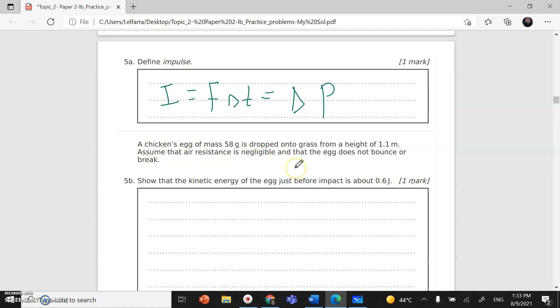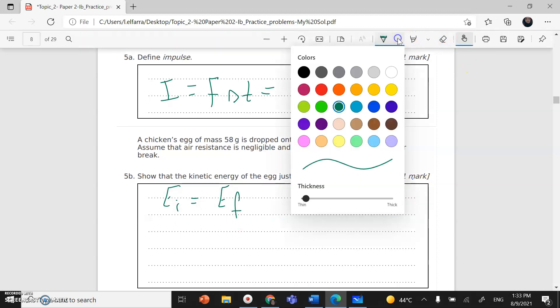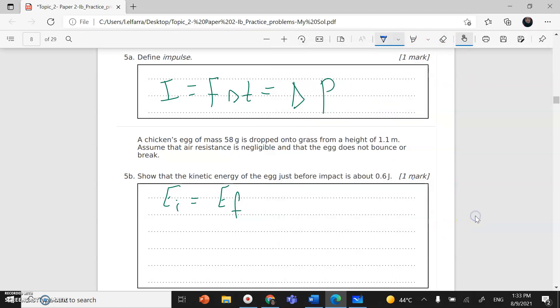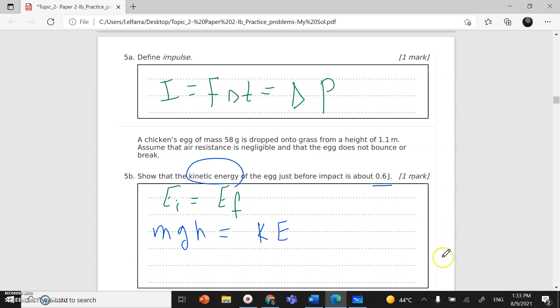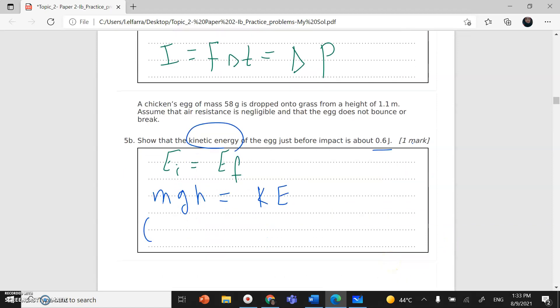Now you have the same egg. I want you to show that the kinetic energy of the egg just before the impact equals 0.6 joules. The egg is falling in free fall. Using conservation of energy, initial energy equals final energy. Initial energy is gravitational potential energy MGH, which equals kinetic energy. I need to prove the kinetic energy equals 0.6.